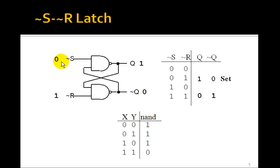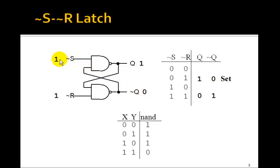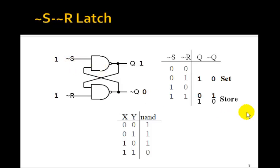Now let's see what happens when we bring NOT-S back to 1. Here's where the magic occurs. We're going to bring NOT-S back to 1. I had a 0 here, so 0 and 1 means the output of the NAND gate stays 1. I've got a 1 and 1, so it stays 0. So nothing happens — when I bring NOT-S back to 1, Q stays 1. Now I'm back in the 1,1 state, but instead of 0,1, I now have 1,0. We're going to call this the store state because I've stored the 1 in Q.